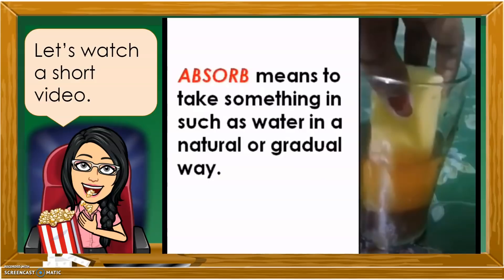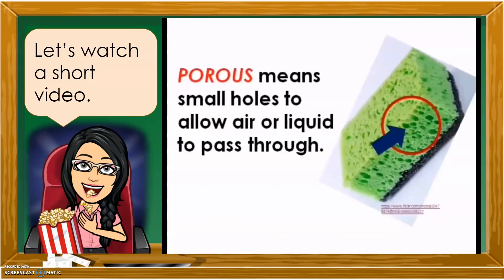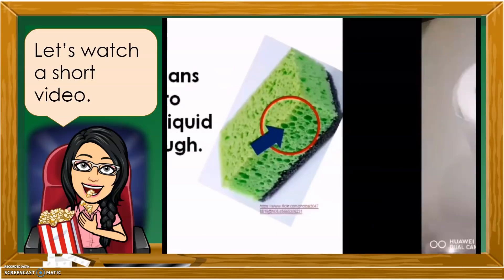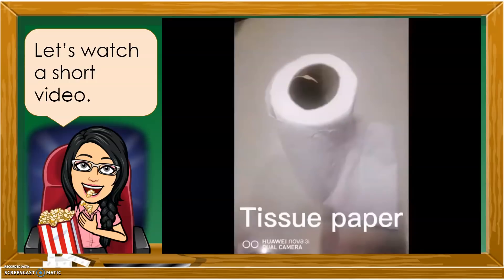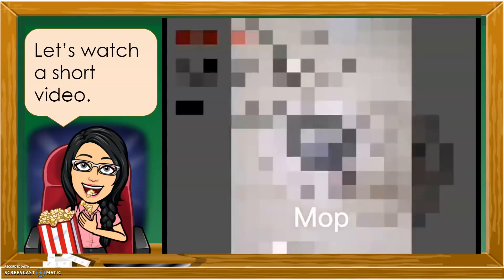Absorb means to take something in, such as water, in a natural or gradual way. Porous means having small holes to allow air or liquid to pass through. Examples of porous materials are tissue paper, sponge, and mop.